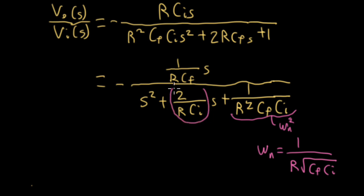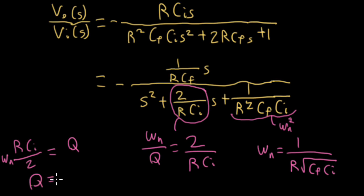Now, the term that's multiplying the S term in the denominator, that's actually omega n over Q. So we have omega n over Q is equal to 2 over R, CI. So we could say that R, CI over 2 is equal to Q over omega n. So the R's wind up canceling and I wind up with Q equal to 1 over 2 square root of CI over CF.